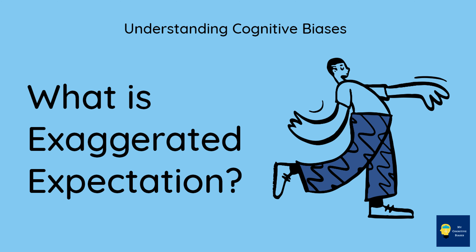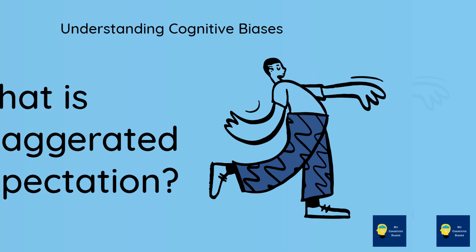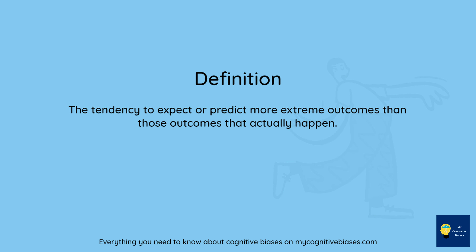What is exaggerated expectation? The tendency to expect or predict more extreme outcomes than those outcomes that actually happen.